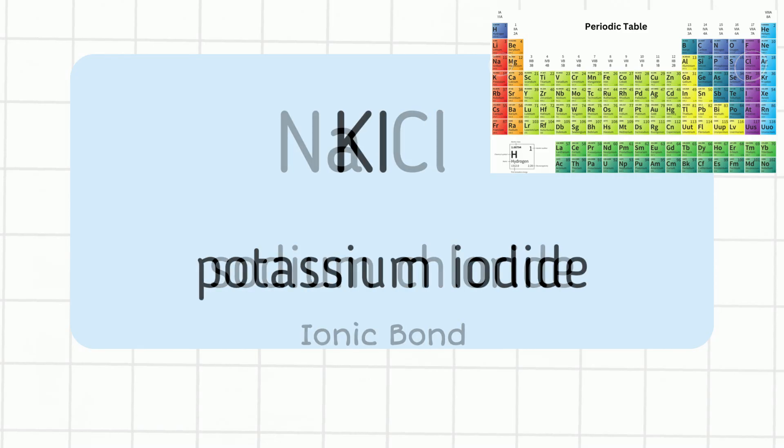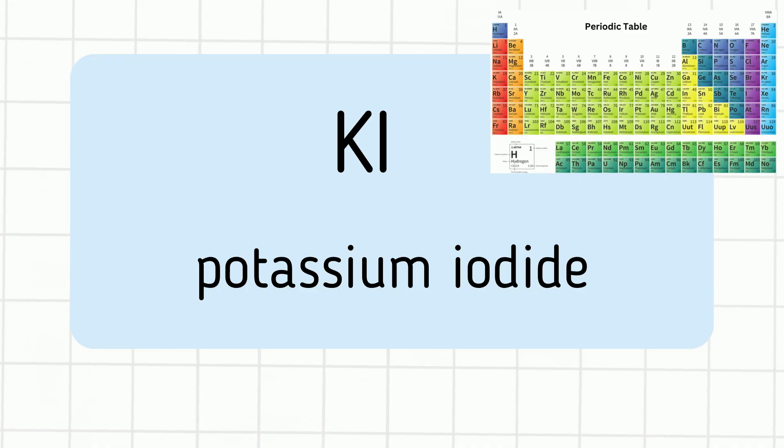Next, we have potassium iodide. Potassium is found in group 1. It is an alkaline metal. And iodine is found in group 17. It is a reactive nonmetal. Again, we have a metal and nonmetal. So it is ionic.